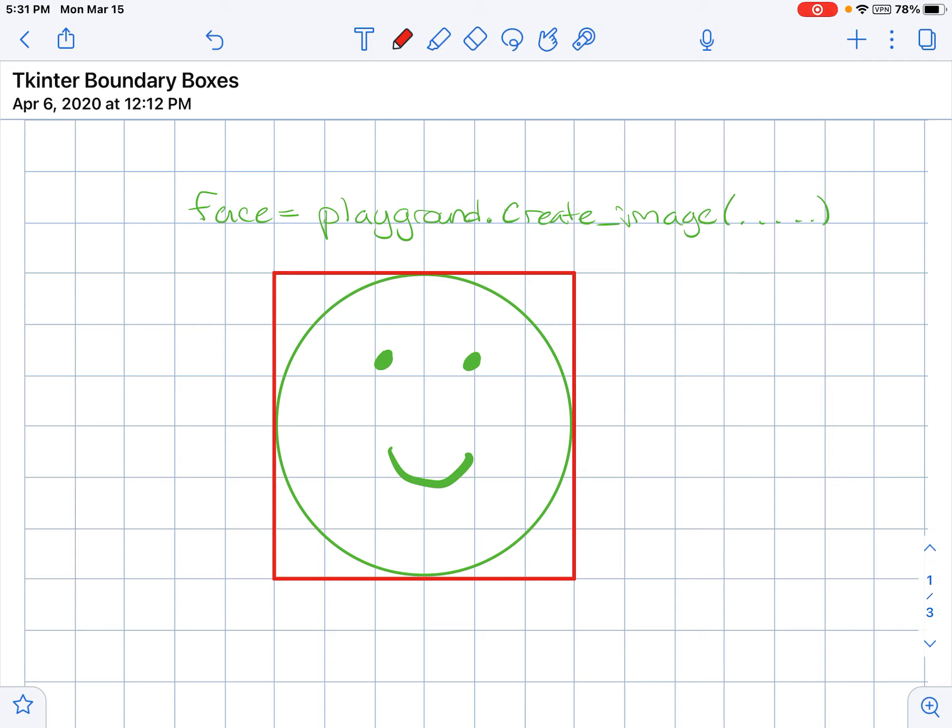When we look at the boundary box, the way Tkinter does it and the way most programs do it is they look at the corners. This corner here and this corner here is what they use to develop the boundary box. They call this x1 and this is y1, so that's the first upper left corner, and this one is x2 and y2.